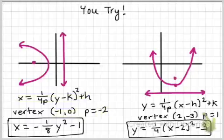For my second parabola, I have a vertical parabola, my vertex at 2, negative 3, and my p value is 1. So, I have 1 over 4p, and then I have x minus 2, the opposite of h, and then plus k.